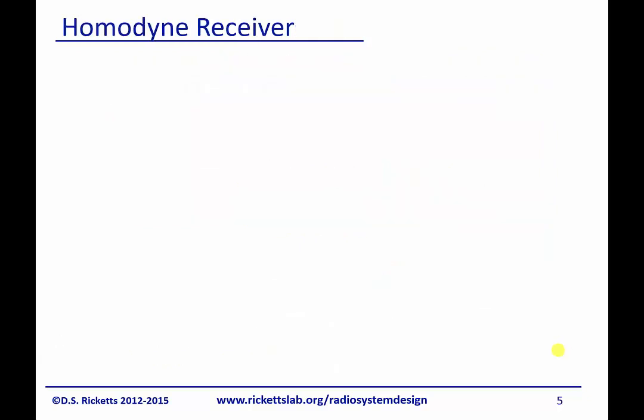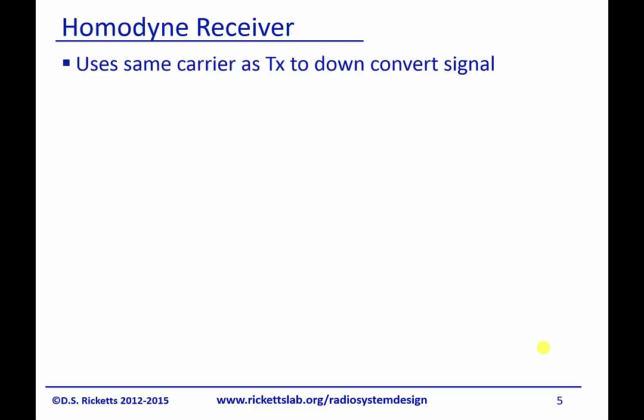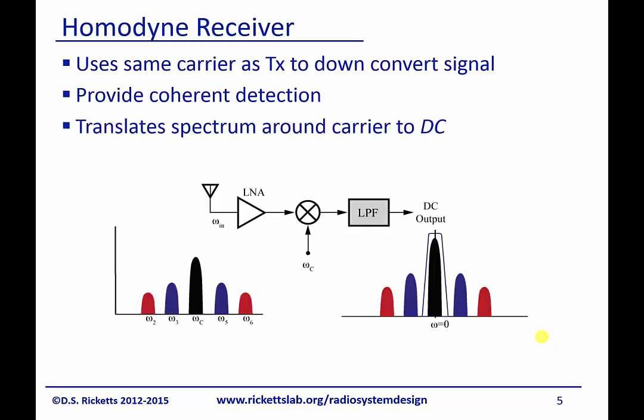Let's talk about the homodyne receiver, which is a special type of single-stage frequency converter. What's key is it uses the same carrier as the transmitter to down-convert the signal. It provides coherent detection because it uses an LO that's synchronized with the transmitter, and it translates the spectrum to DC. The key point I want to emphasize is that these two — the LO and the carrier — are the same.